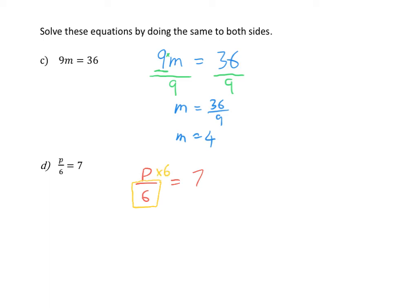What I do to the left-hand side, I also need to do to the right-hand side. So my equation becomes p is equal to 7 times 6, so p is equal to 42. By doing a series of inverse operations, I can isolate an unknown variable and determine its value. Thank you.